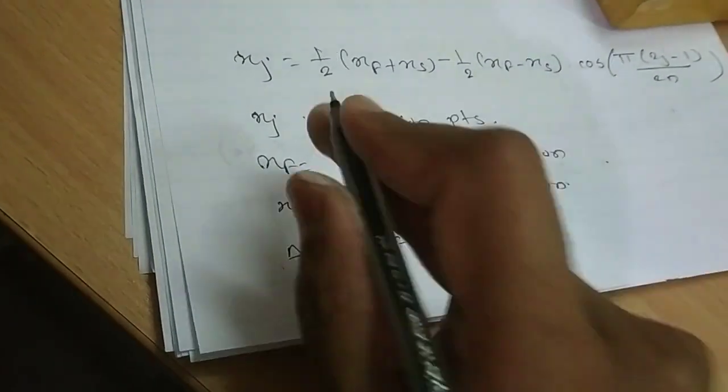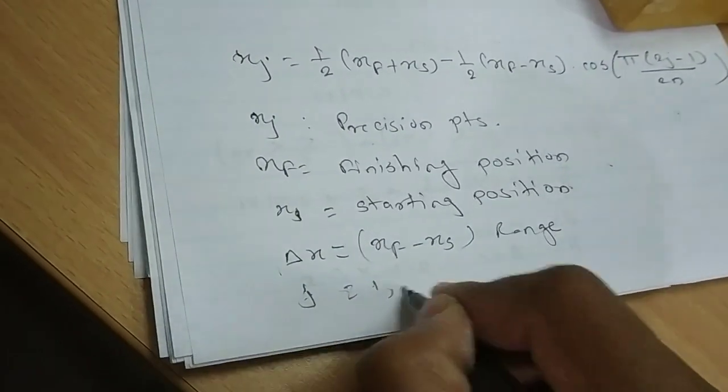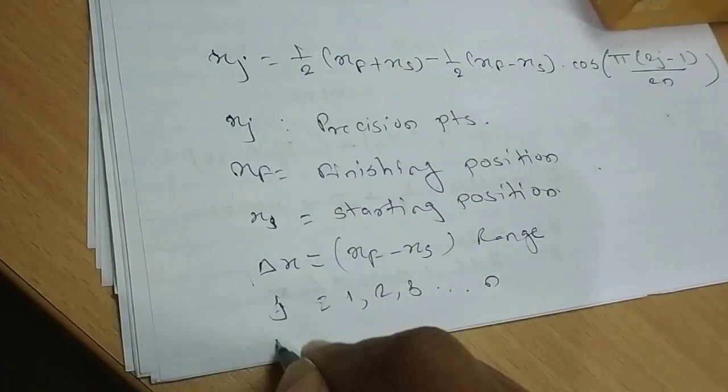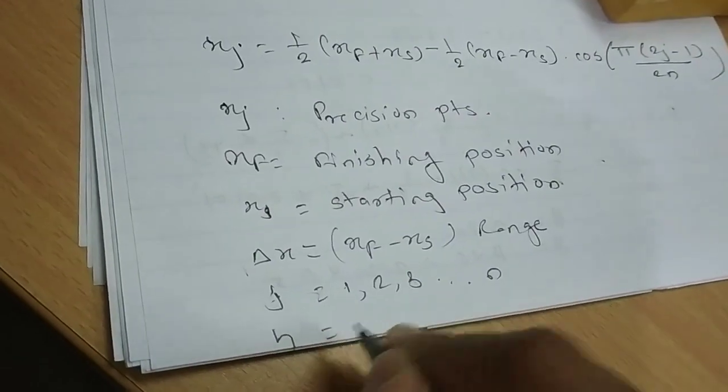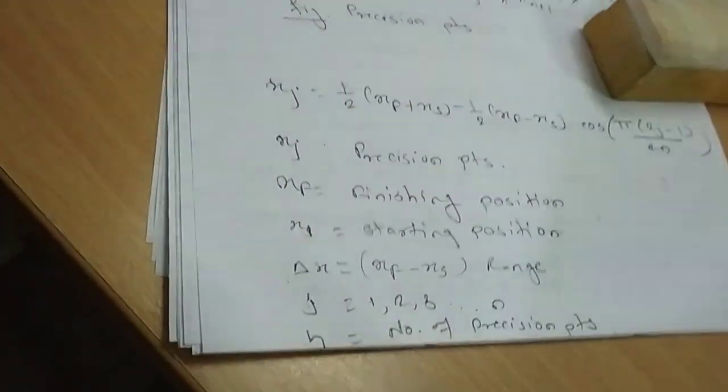Then delta x is a range xf minus xs. J is precision points, so 1, 2, 3 up to n. And n is total number of precision points.